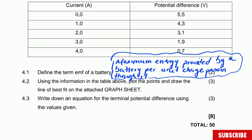Question 4.1: Define the term EMF of a battery. The definition of EMF is the maximum energy provided by the battery per unit charge passing through it. Remember, the definition of potential difference is work done per unit charge — same formula, but for EMF we say maximum energy because we're talking about the battery.